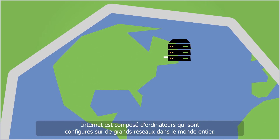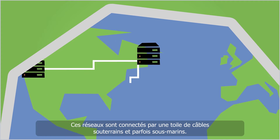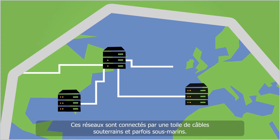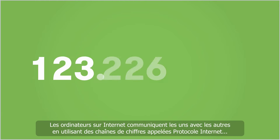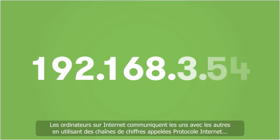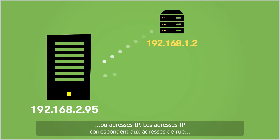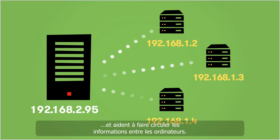The Internet is made up of computers that are set up in large networks around the world. These networks are connected by a web of underground and, in some cases, undersea wires. Computers on the Internet communicate with each other using strings of numbers called Internet Protocol, or IP addresses. IP addresses function like street addresses — they identify where a computer is located on the Internet and help guide the information traveling between computers.